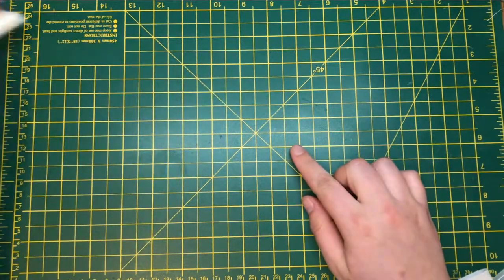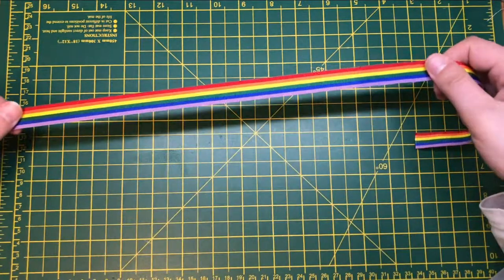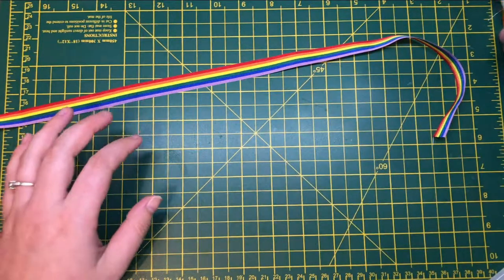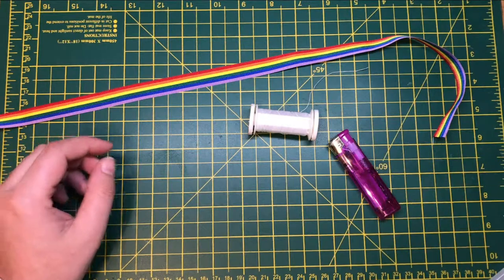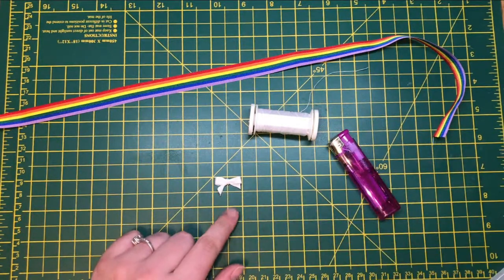So for this make you're going to need a rainbow ribbon, cotton, a lighter, the tiny little bow that you made using a fork,